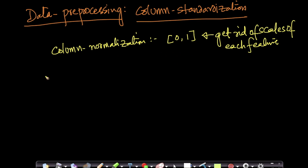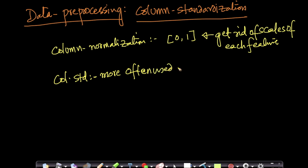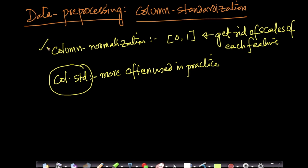A similar related technique is called column standardization — it's also a data pre-processing technique. Column standardization is more often used than normalization in practice because it has a nice relationship to Gaussian distributions. We also saw the geometric interpretation of normalization, where all the points are squished into a unit hypercube.